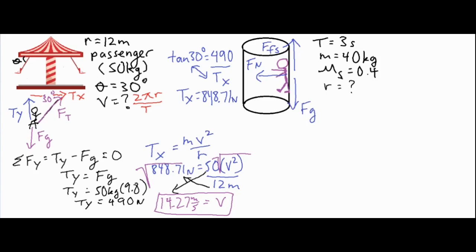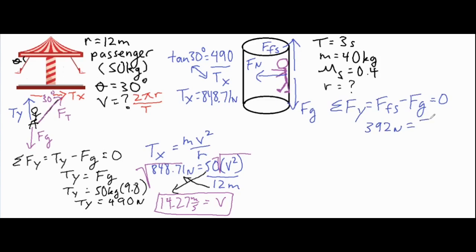Looking at the vertical forces, the sum of forces in the y direction gives us force of static friction minus Fg equals zero, so these two are equal. Fg = 40 × 9.8 = 392 newtons, and that equals the force of static friction.